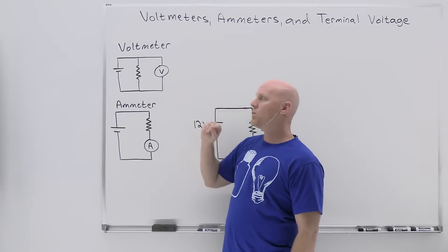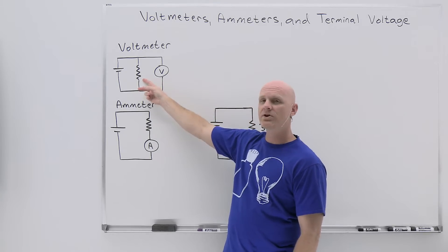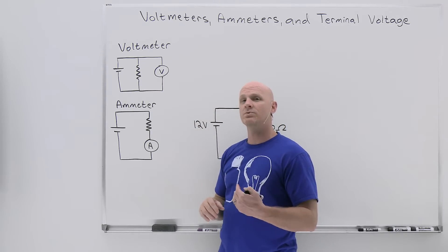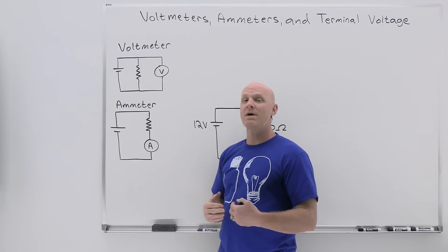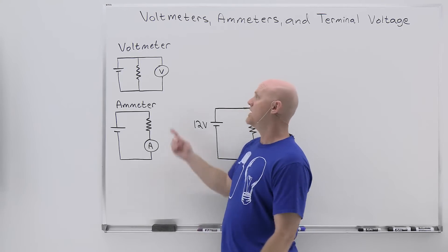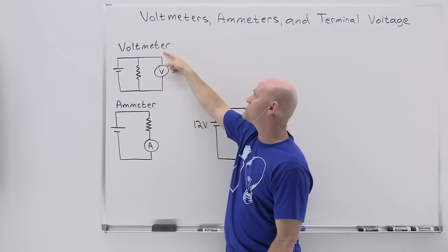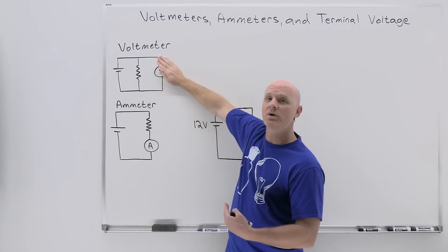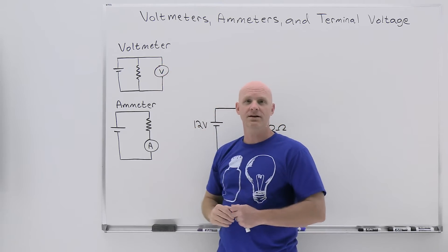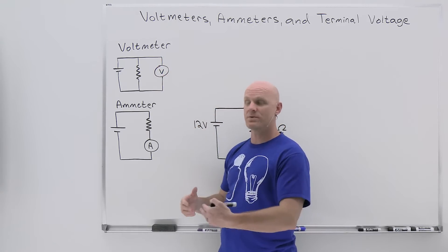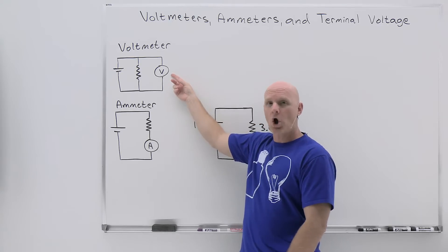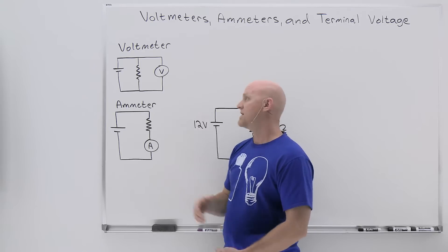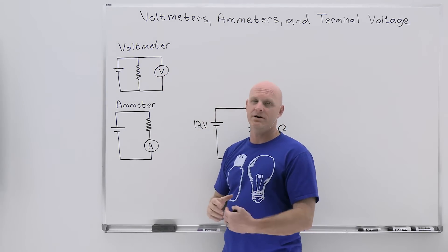So if we had infinite resistance here, what that ultimately means is that all the current in the circuit would go through the other resistor. You might recall from our last lesson that when resistors are in parallel, the current prefers the path of less resistance. Well, if this was infinite resistance, that would mean zero current flows through it and all the current would flow through the other just as if the voltmeter wasn't there. Again, we can't really have infinite resistance, but we can have very large resistances associated with our voltmeters on the order of kilo-ohms or even mega-ohms so that it influences the circuit in very minor fashion.